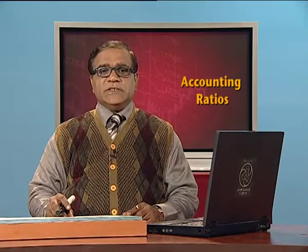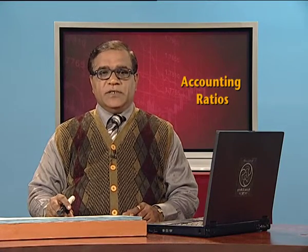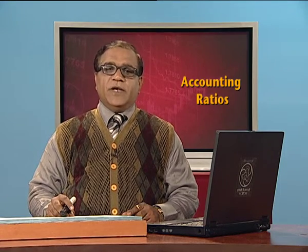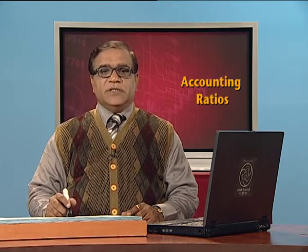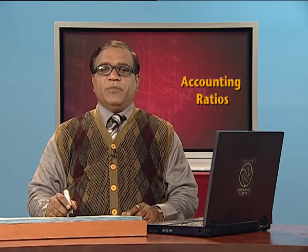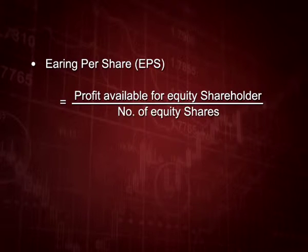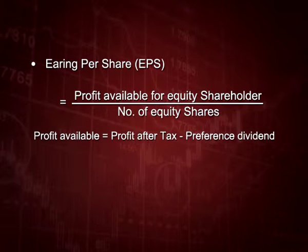The next ratio is earning per share. As the name suggests, we are trying to calculate what we are earning on one share. This ratio is calculated by dividing profit available for equity shareholders by the number of equity shares. To calculate profit available for equity shareholders, we take profit after tax and deduct preference dividend from it. This ratio is very important for share prices in the market.